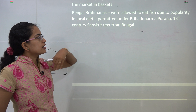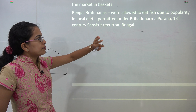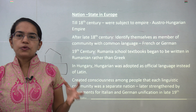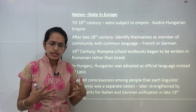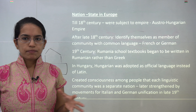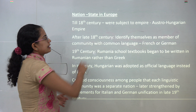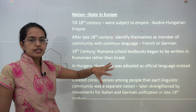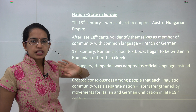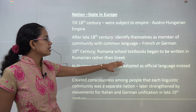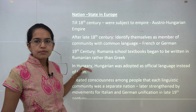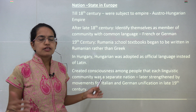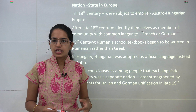As we talked about Bengal Brahmins consuming fish as a diet, this was permitted under Brihaddharm Puran, a 13th century Sanskrit text from Bengal. Similar to things happening in India, across the world the concept of the nation-state emerged. Till then, there were regions subject to empires — for example, the Austro-Hungarian empire. However, after the 18th century, people tried to identify themselves based on languages. French people from France spoke French, German people from Germany spoke German. Similarly, in the 19th century, Romanian schools separated from Greek because they had their own Romanian language, and Hungarian people separated from Latin because they spoke Hungarian.